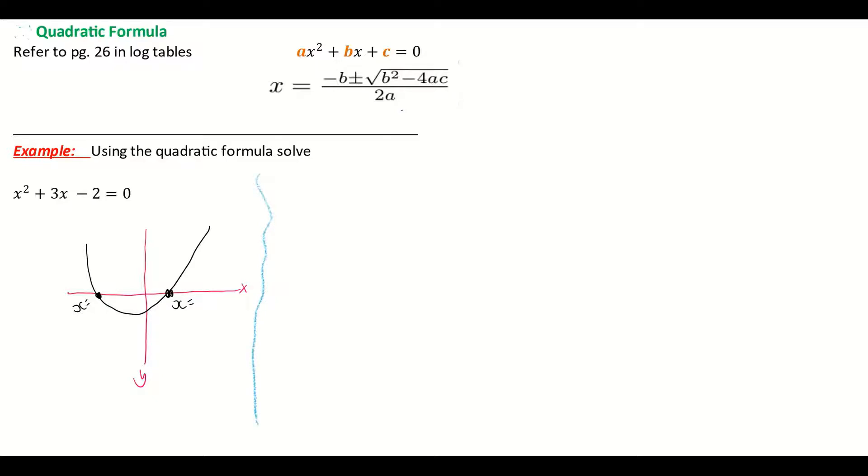First of all, in any exam situation, you should always write down your formula, what you're going to use. So I'm going to use my formula x equals minus b plus or minus the square root of b squared minus 4ac all over 2a. That's the formula for my log tables. Next thing I would do is write down, before subbing them into my formula, I'm going to write down the values for a, b, and c.